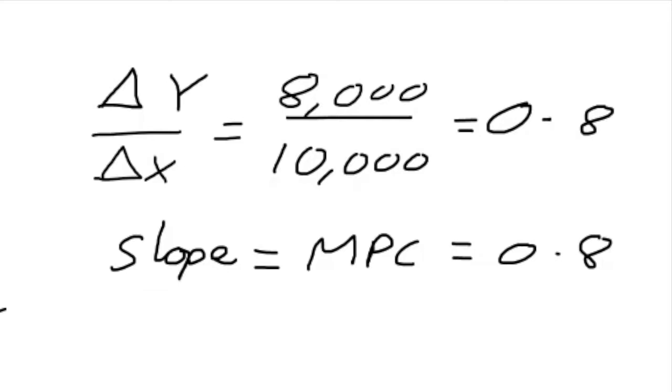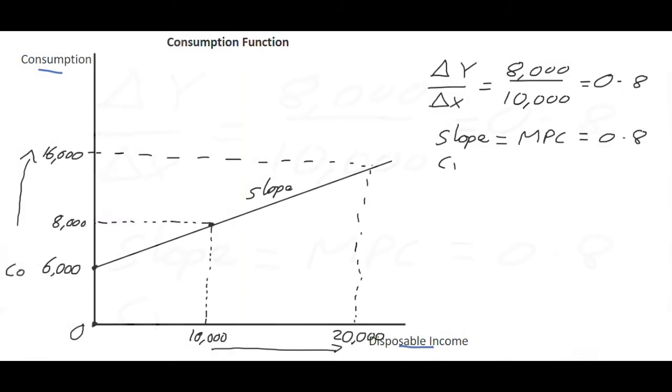The slope of a consumption function represents the marginal propensity to consume in an economy. And in equation terms what we are going to call this slope is C1. So we have an intercept term which is C0 and a slope term which is C1.